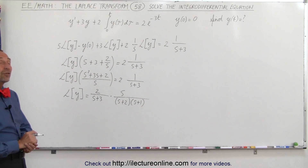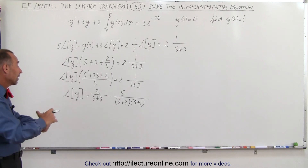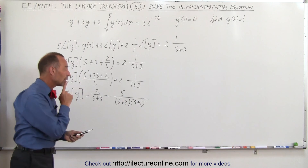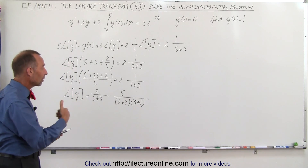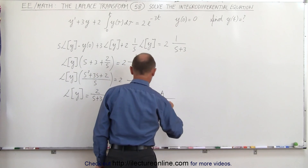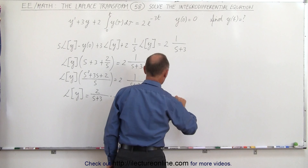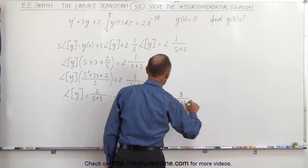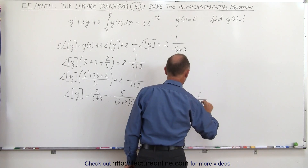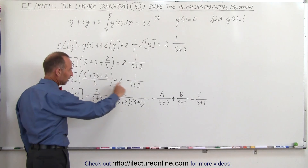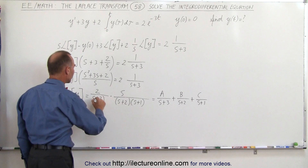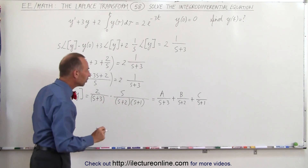Now we want to take the inverse Laplace transform. Since we have a product, we can write this as a sum of partial fractions: A over (s plus 3) plus B over (s plus 2) plus C over (s plus 1). Notice the numerator is 2s and the denominator is the product of (s plus 3), (s plus 2), and (s plus 1).